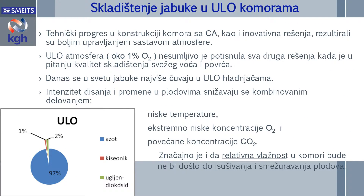Tehnički progres u konstrukciji komora sa kontrolisanom atmosferom, kao i inovativna rešenja, rezultirali su boljim upravljanjem sastavom atmosfere. To je dovelo do mogućnosti da se ostvare ekstremni uslovi — ekstremna kontrolisana atmosfera gde je sadržaj kiseonika samo oko 1%. ULO atmosfera potisnula je sva druga rešenja kada je u pitanju kvalitet skladištenja svežeg voća i povrća. Danas u svetu jabuka najviše se čuva u ULO hladnjačama.